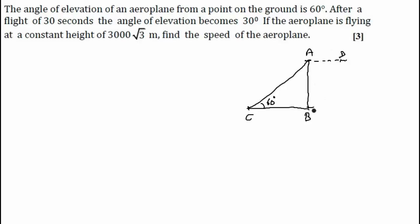Let us mark this new position as E. These are the two positions of the aeroplane, A and D. The angle of elevation changes from 60 degrees to 30 degrees, constant height 3000√3, and this time is 30 seconds. We need to find the speed of the airplane. Time is given only for this distance, so we need to find distance BE.